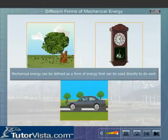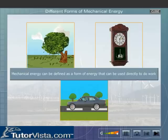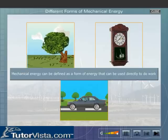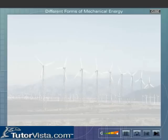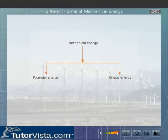Thus, Mechanical Energy can be defined as a form of energy that can be used directly to do work. The two forms of Mechanical Energy are Potential Energy and Kinetic Energy.